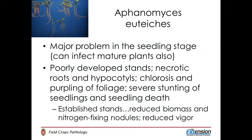The first and probably one of the most important diseases we see in the state of Wisconsin on alfalfa is Aphanomyces euteiches, which causes Aphanomyces root rot. This can be a major problem in the seedling stage but can also be a lingering problem all through the multiple growing years of alfalfa. It does cause poorly developing stands, can cause necrotic roots, and basically continues to feed on the root, compromising the root system.